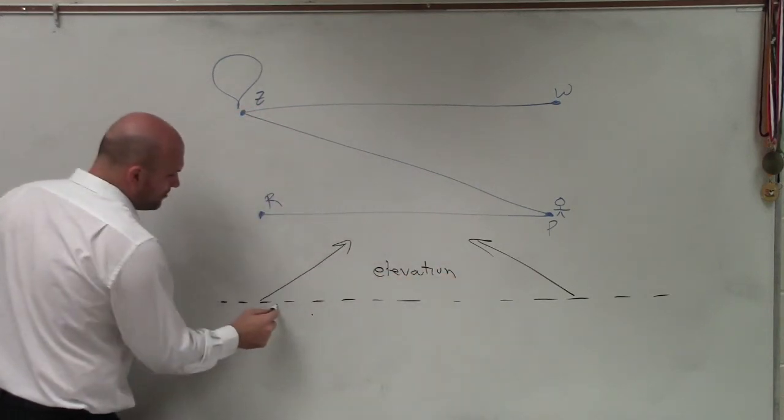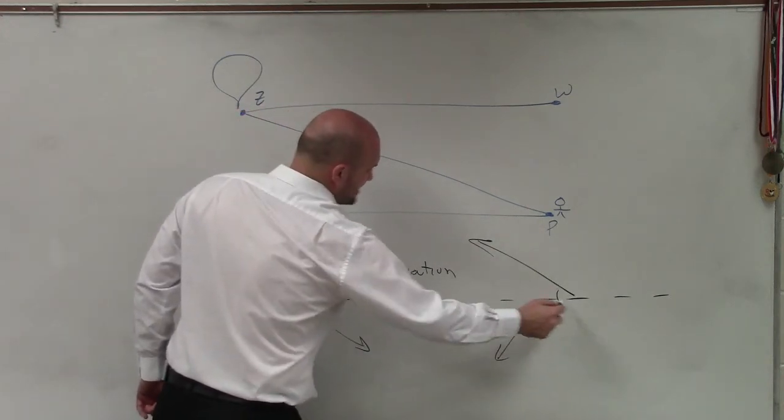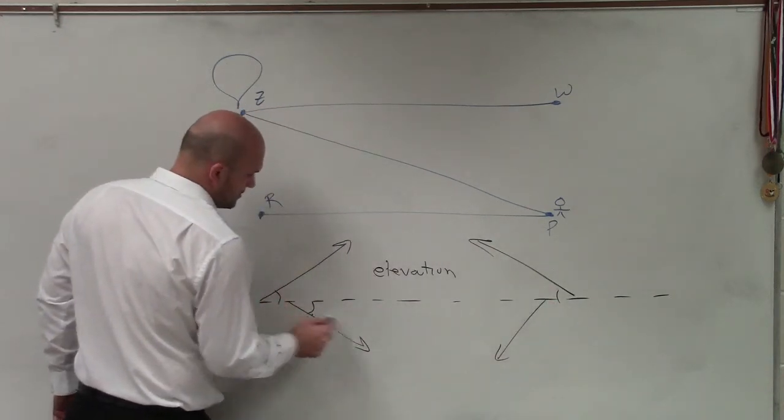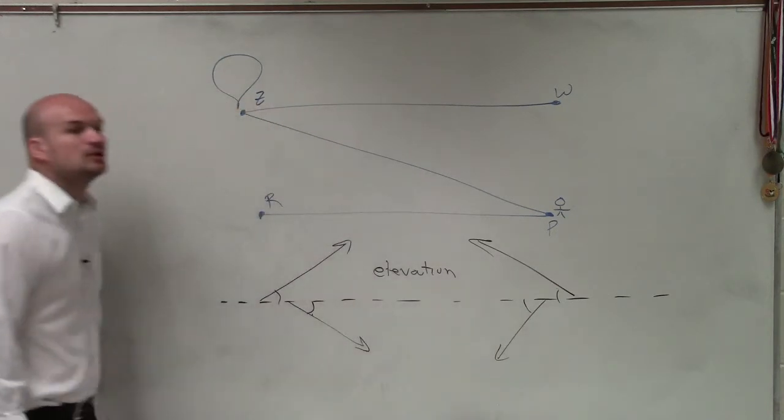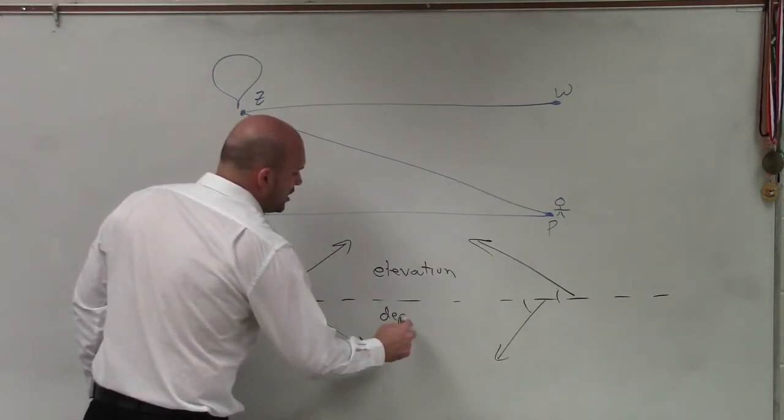Then, when you had an angle below, let me write these angles in. When you had an angle below your horizontal, that was what we call an angle of depression.